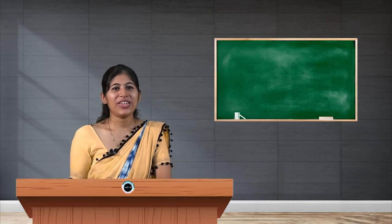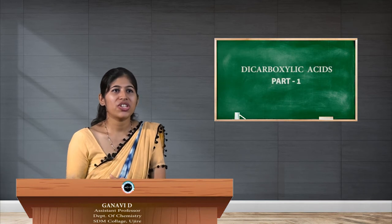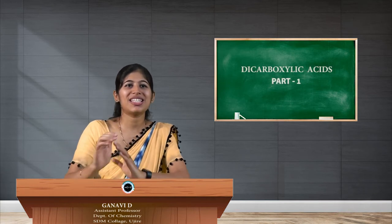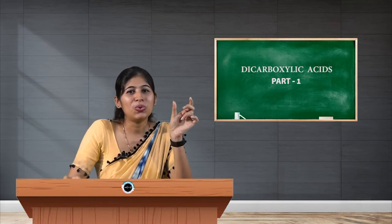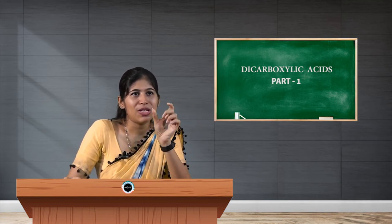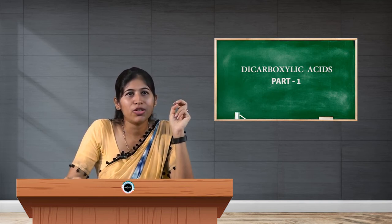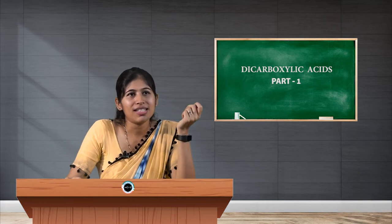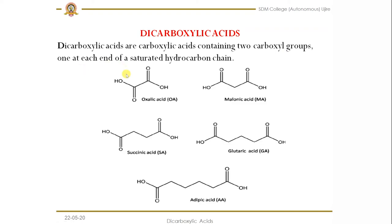Hello students, myself Ganavi, assistant professor, SDM College. Today in this video I'm going to give an introduction to the dicarboxylic acid. The name itself says what you mean by dicarboxylic acid, where 'di' refers to two. Carboxylic acids are carbons which have COOH groups. If there are two carboxylic groups in the structure, then it is called a dicarboxylic acid — containing two carboxylic groups, one at each end of the saturated hydrocarbon.